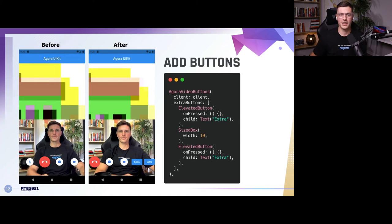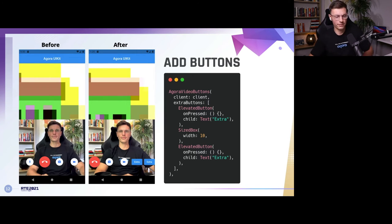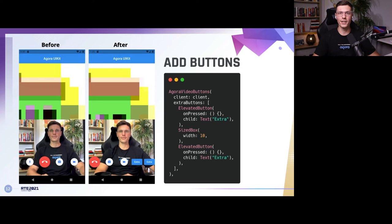So before we had four buttons and then we added two more extra buttons — they don't do anything specific in this case, but if you wanted them to do something you have that freedom. That's what the Agora UI kit is all about: letting you customize however you want while still making it easy to have a simple setup.